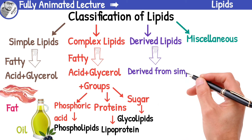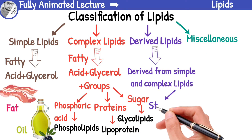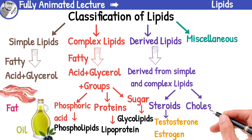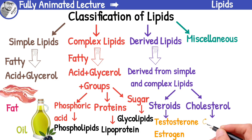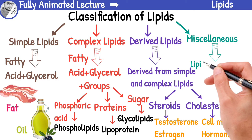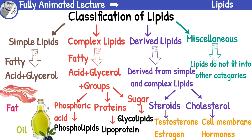Derived lipids are derived from simple and complex lipids. Steroids include hormones like testosterone and estrogen, which play a role in our body's growth and development. Cholesterol is another important derived lipid that helps your body make cell membranes, many hormones, and vitamin D. Miscellaneous lipids include all other types of lipids that do not fit into the above categories. One example of miscellaneous lipids are sphingolipids, which are important components of cell membranes and help with cell signaling.